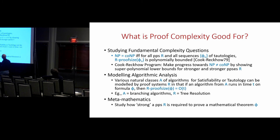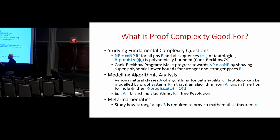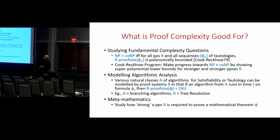If there exists a propositional proof system R such that for all sequences of tautologies the proof size of φ_n in R is polynomially bounded, that's equivalent to NP equals co-NP. If there is a polytime proof system with polynomially bounded proofs, you can solve TAUTOLOGY by guessing a proof and checking it, giving an NP algorithm for a co-NP complete language, which implies NP equals co-NP. Conversely, if NP equals co-NP, tautologies are in NP and you can define a proof system where all tautologies have polynomial-size proofs.